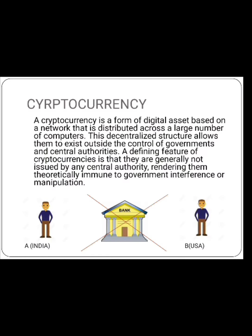So what is a cryptocurrency? A cryptocurrency is a form of a digital asset based on a network that is distributed across a large number of computers. In simple language, cryptocurrency is a digital form of cash.